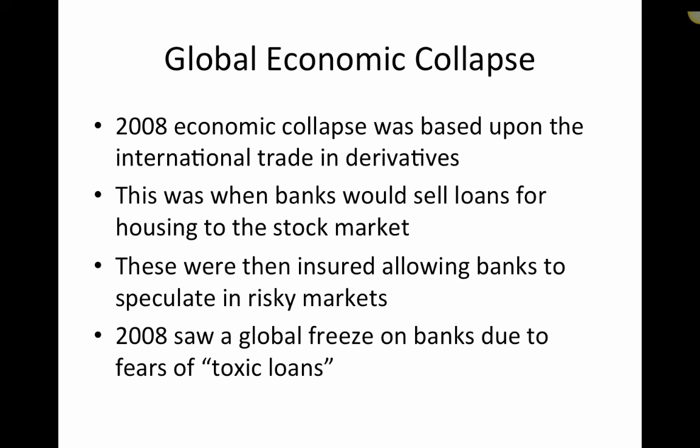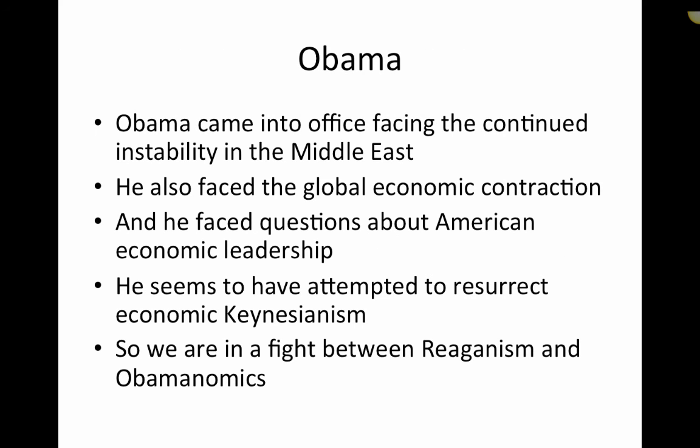Then in 2008, there was a massive global economic collapse based upon a new type of international trade called derivatives — basically just meaning added value. Banks would sell housing loans to the stock market, which were then insured so banks couldn't lose, allowing them to speculate in very risky markets. By 2008, it turned out that many loans given to homeowners were very poor loans to people who couldn't pay them back, causing a global freeze in which banks would not lend to one another for fear of what were called toxic loans. That led to President Barack Obama.